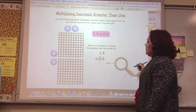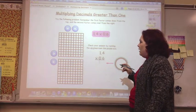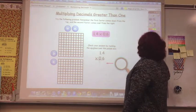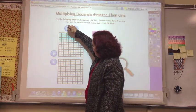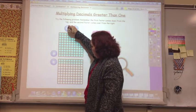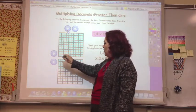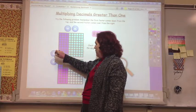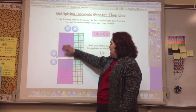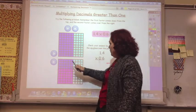So now we're going to be multiplying decimals greater than one. So if you've got 1 and 4 tenths, how would you show that? You would show a whole one and then 4 tenths. One, two, three, four. And if you had 6 tenths, you would show it one, two, three, four, five, six.